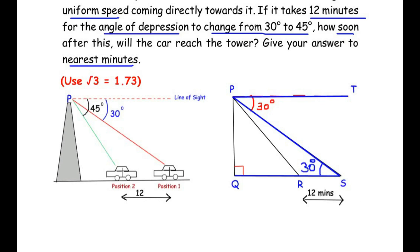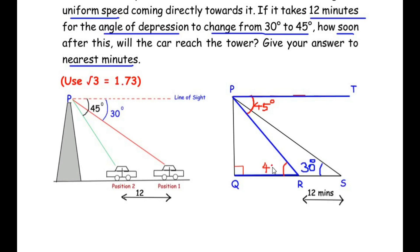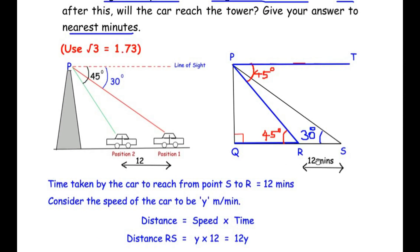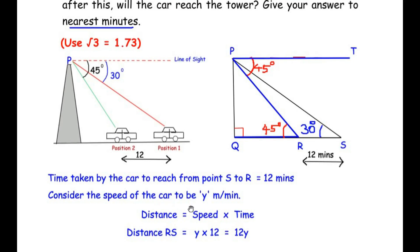Now consider the second angle of depression of 45 degrees. The parallel lines PT and QR are cut by transversal PR, giving alternating angles — so angle PRQ becomes 45 degrees. The time taken by the car to travel from S to R is 12 minutes. Let the speed of the car be y meters per minute. Using distance = speed × time, distance RS equals 12y. This is equation 1.